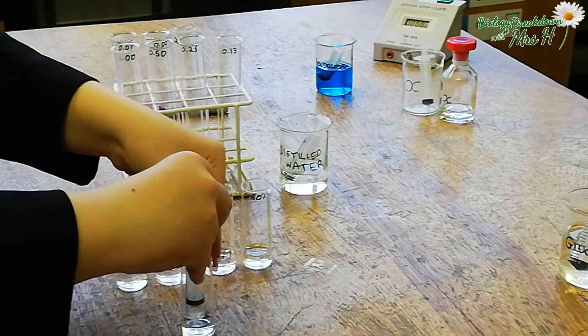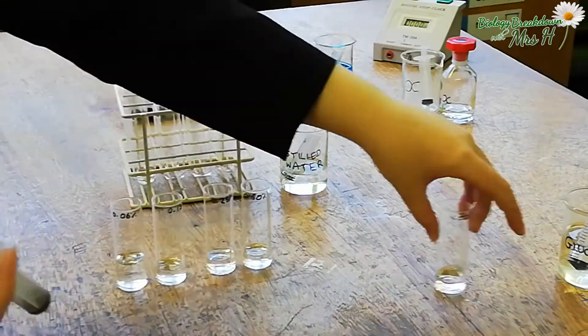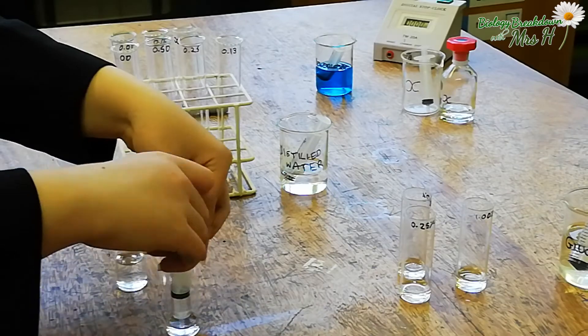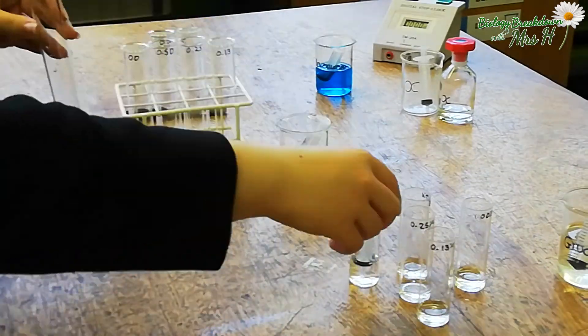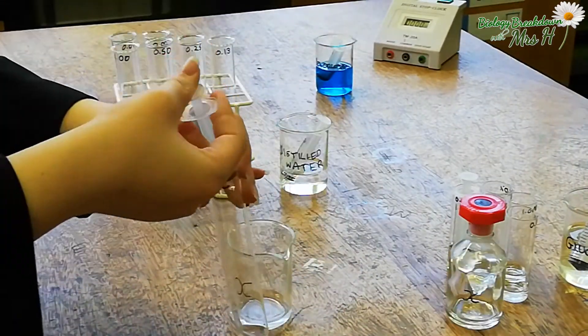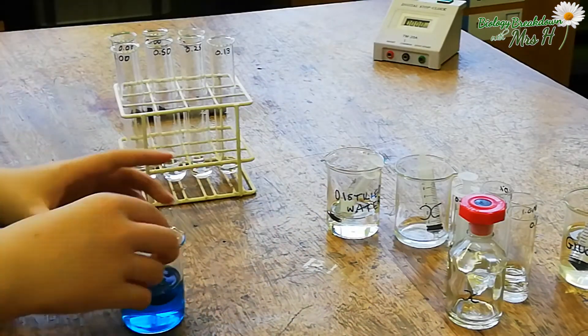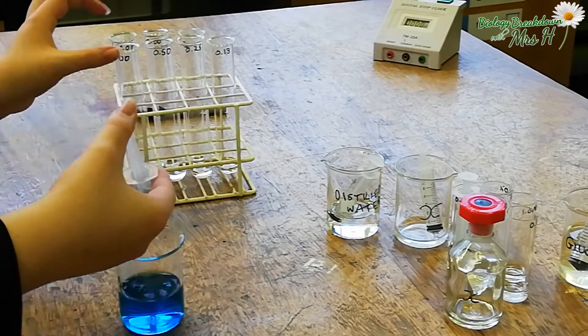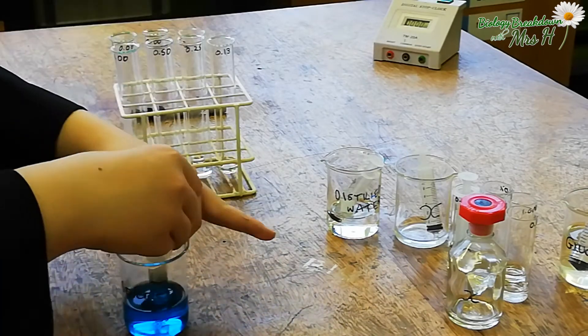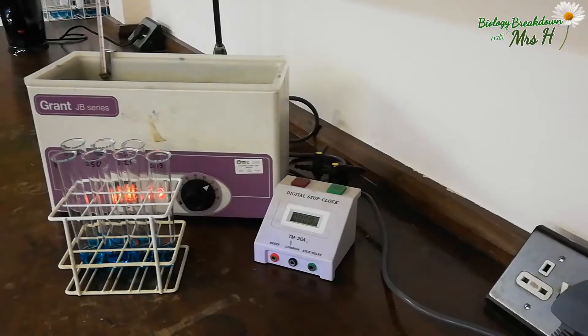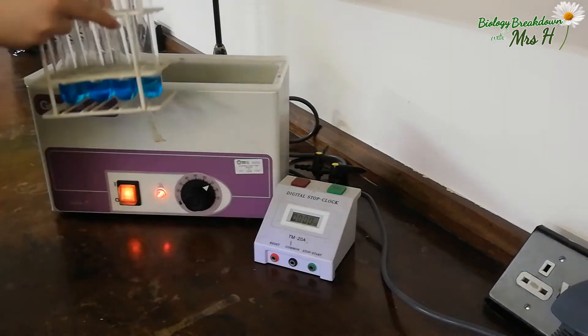Add 2 cm³ of each concentration to the corresponding boiling tubes. You will also need to add 2 cm³ of the unknown solution and 2 cm³ of the distilled water. Then add 5 cm³ of Benedict's reagent to each tube and place in a hot water bath set around 80°C for 15 minutes.